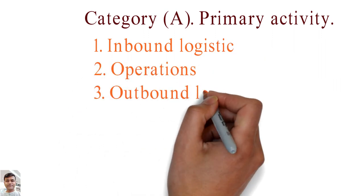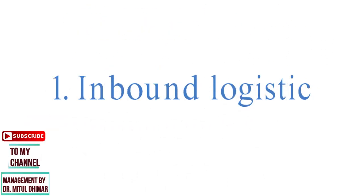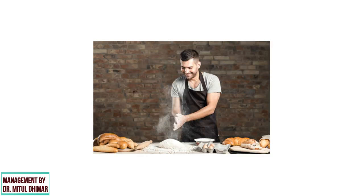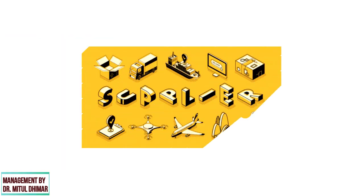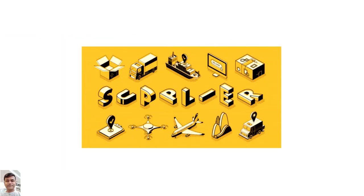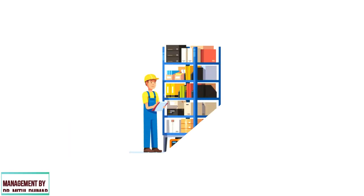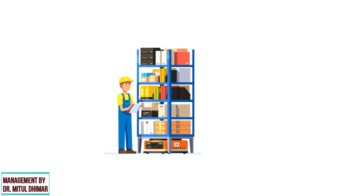The five primary activity groups are: inbound logistics, operations, outbound logistics, marketing and sales, and services. Point number one: inbound logistics. Inbound logistics is where purchased inputs such as raw materials are often taken care of. Due to this function, it is also in contact with external companies such as suppliers. Activities associated with inbound logistics are receiving, storing, and disseminating inputs to the product.